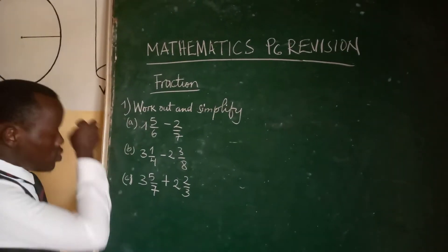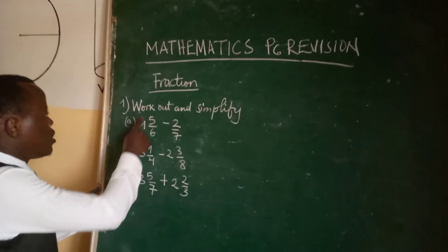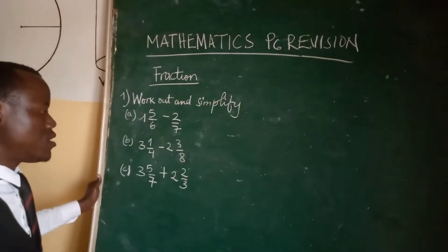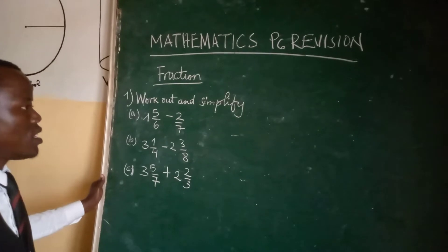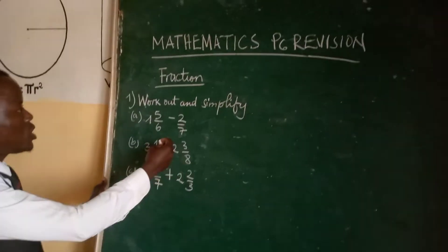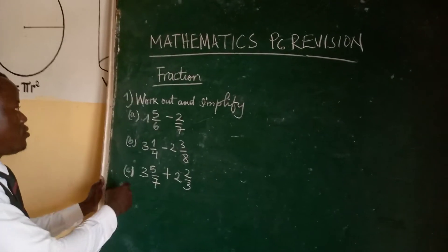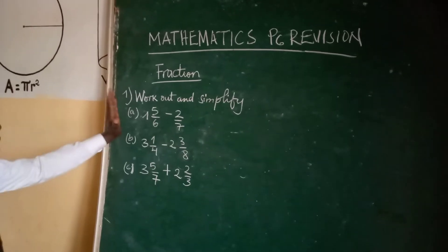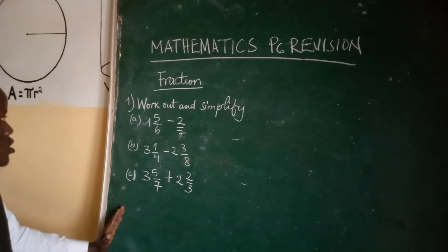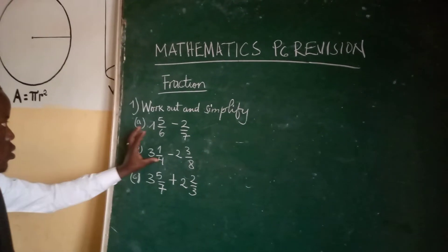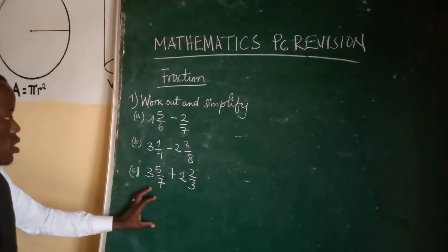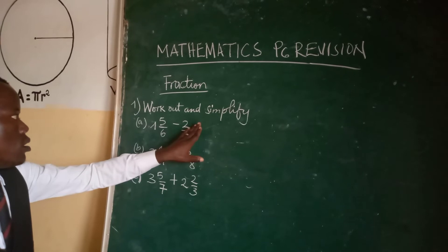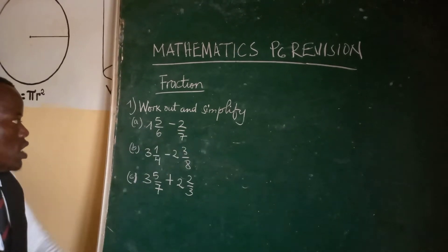Let's start by question number one: work out and simplify. So we have three sub-questions, A, B, and C, and for those questions we are going to calculate to find the differences and the sum, and then after we are going to simplify.